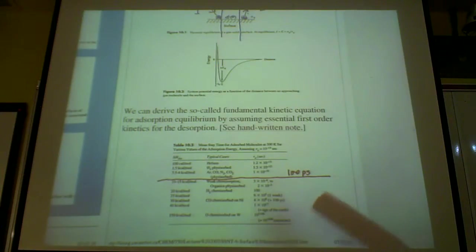And we talked about CO-nickel absorption on nickel earlier, it takes 100 years. It's about 30 kcal. The mean state time of this CO molecule on nickel is 100 years.